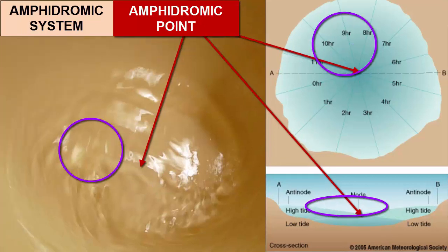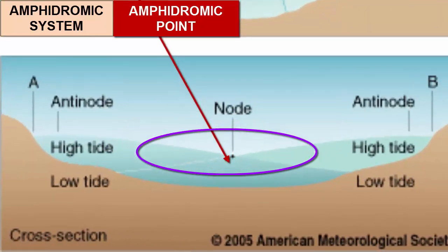This cross section through the amphidromic system points out what the sloshing looks like from the side at two moments in time. One where one side has water sloshing up high tide and the other water sloshing away low tide, and then the opposite. Notice that the tidal range increases as we move away from the amphidromic point. So where in this image would you expect to find the largest tidal range? As far away from the amphidromic point as you can get.